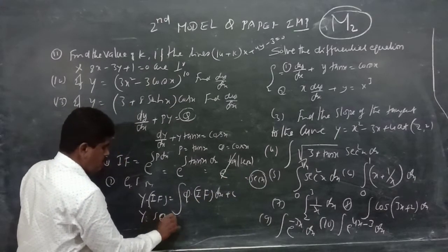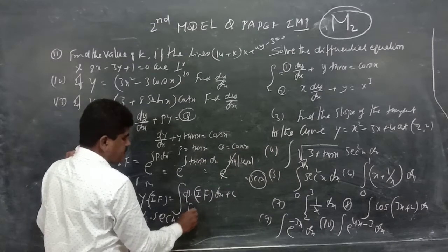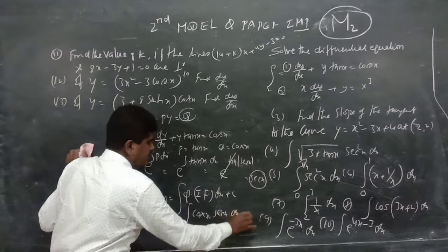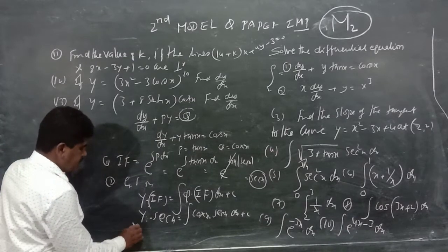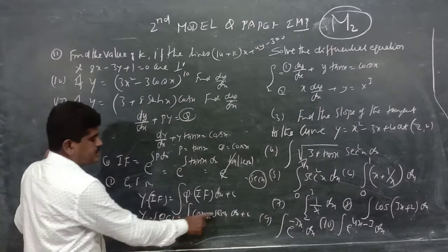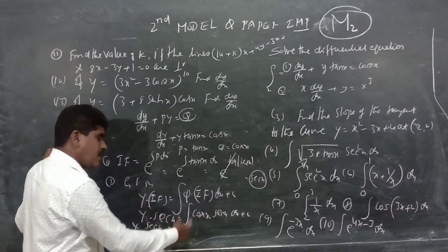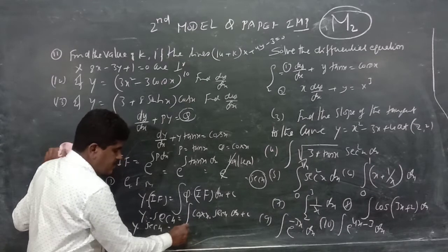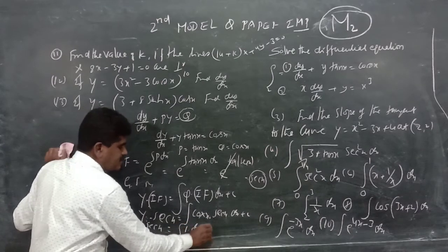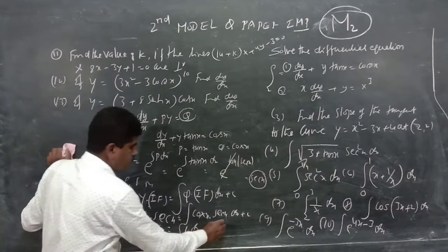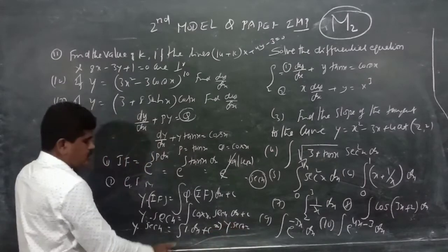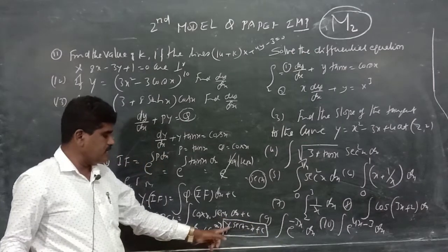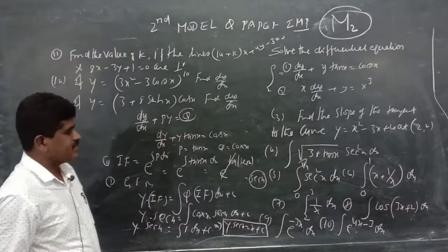Now y·sec x equals the integral of cos x times sec x dx plus C. Since sec x equals 1/cos x, their product cos x · sec x equals 1. So y·sec x equals the integral of 1 dx plus C, which gives y·sec x equals x plus C. This is the solution.